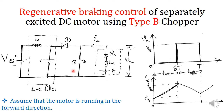A Type B chopper is used for that purpose. So a motor which is running in the first quadrant — running in the forward direction — is connected like this. When switch S1 is closed, the back EMF drives a current in this direction. We will discuss what happens during this interval.